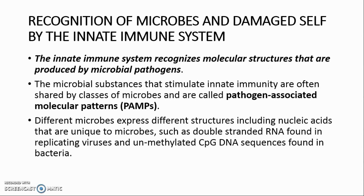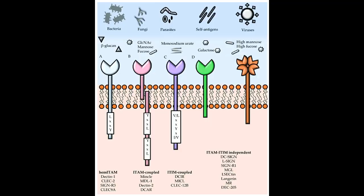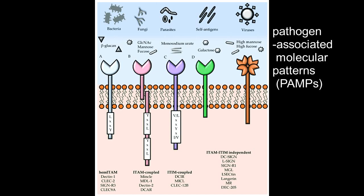Recognition of microbes and damaged self by the innate immune system: The innate immune system recognizes molecular structures produced by microbial pathogens. The microbial substances that stimulate innate immunity are often shared by classes of microbes and are called pathogen-associated molecular patterns, PAMPs.